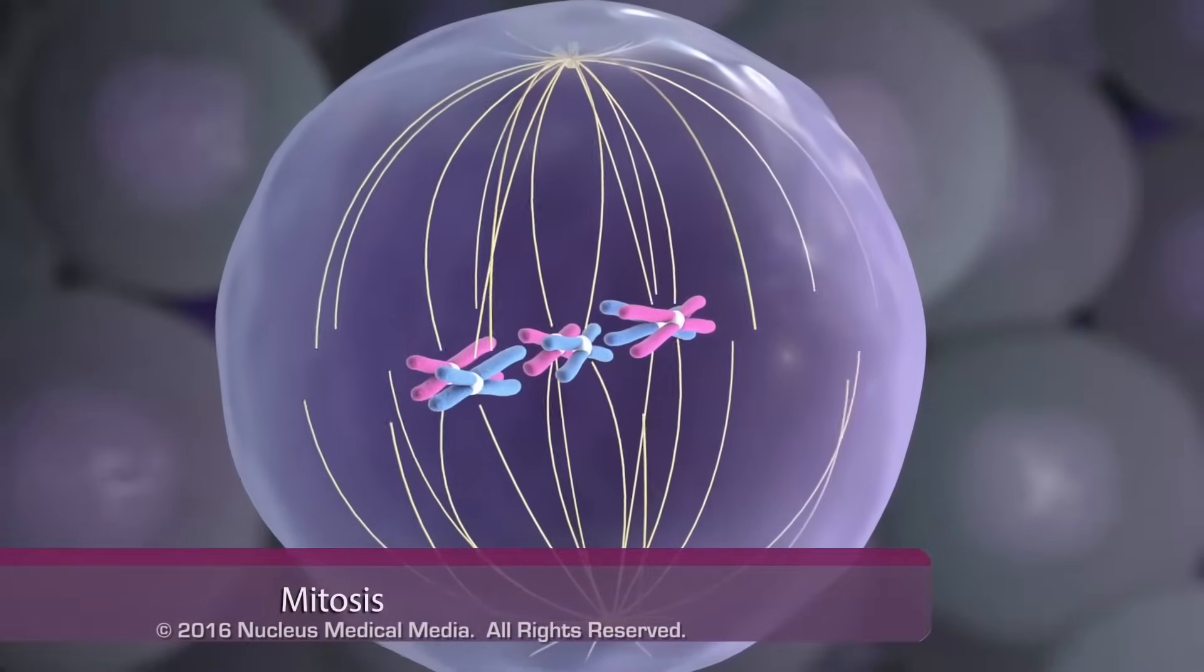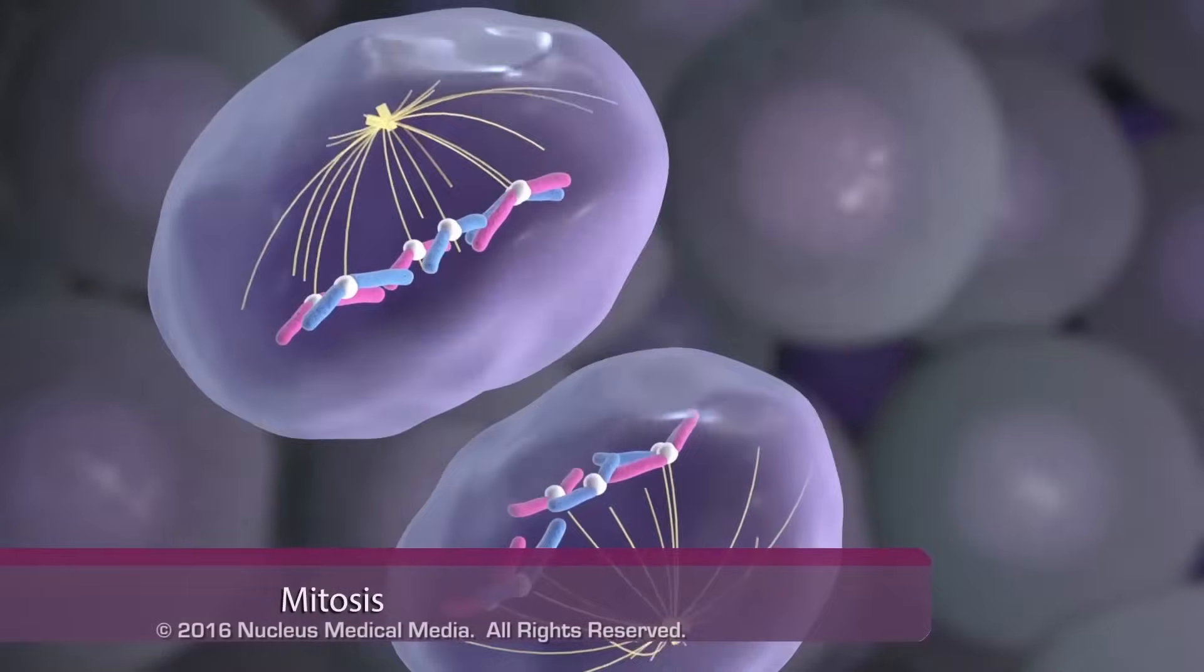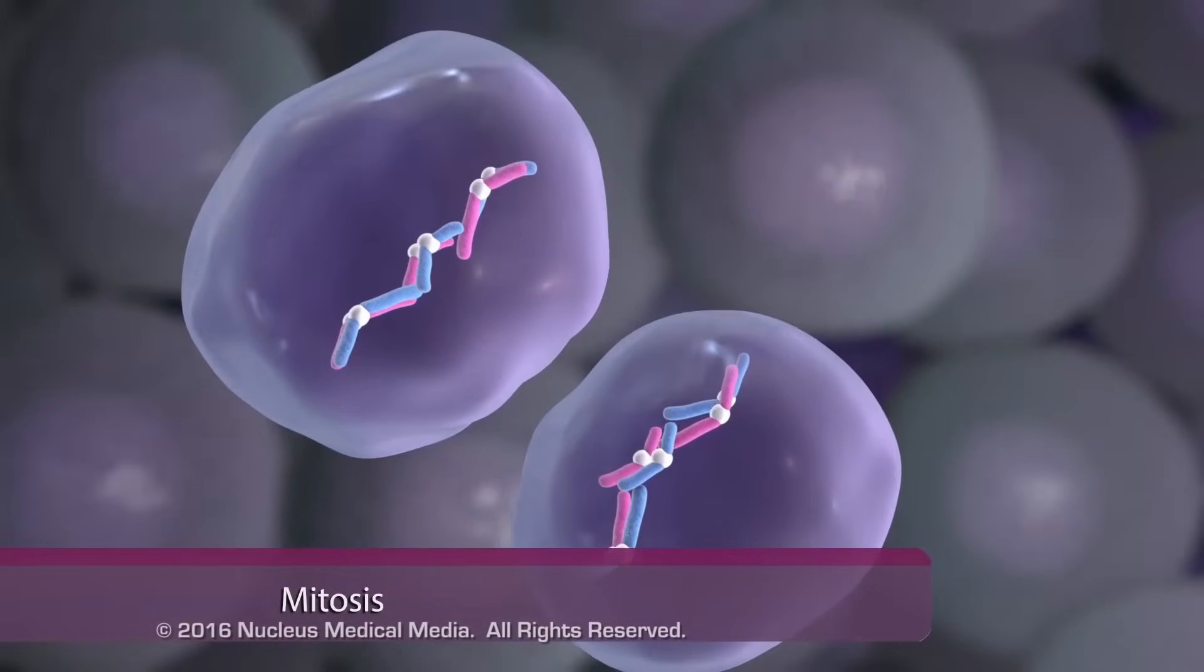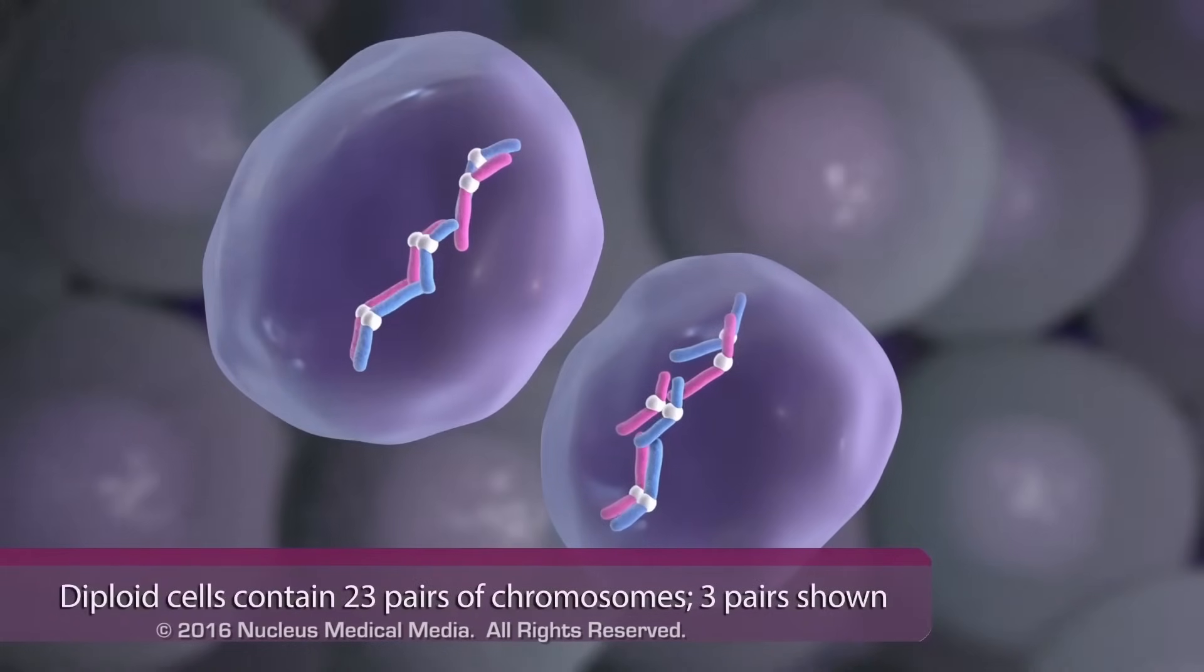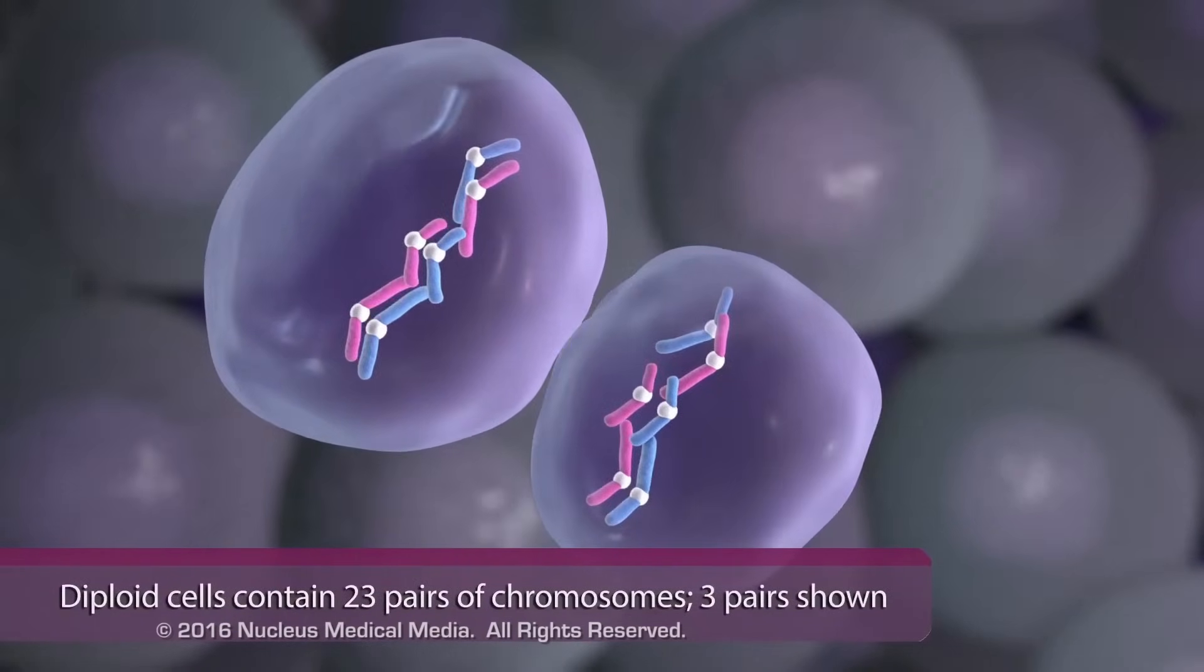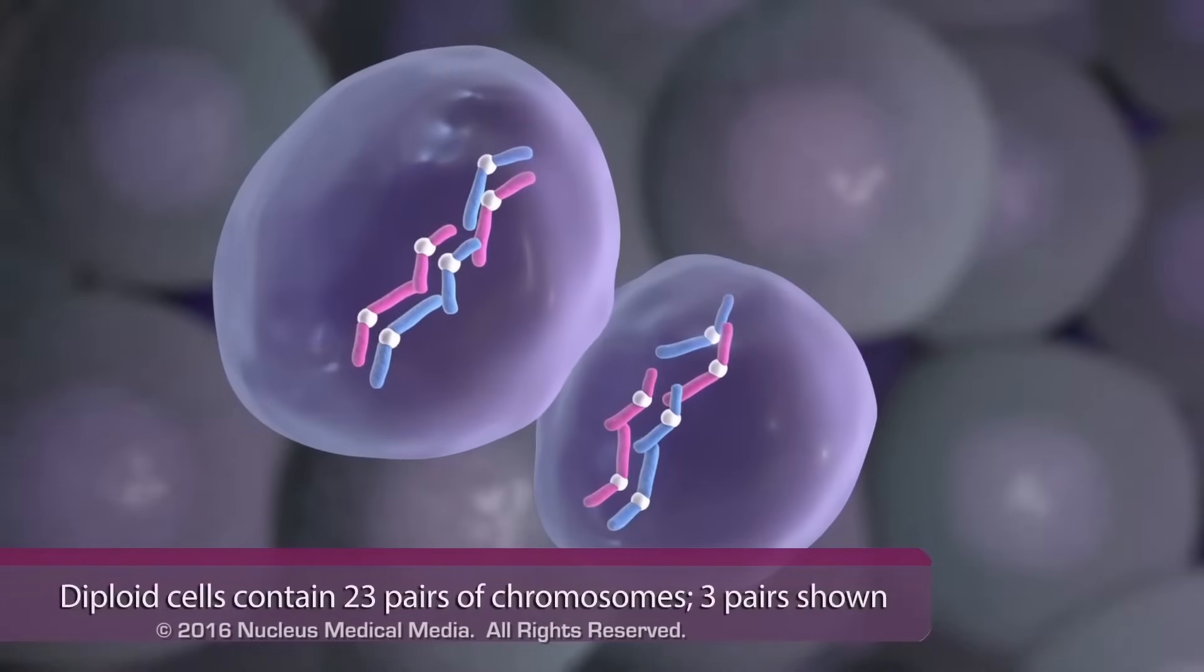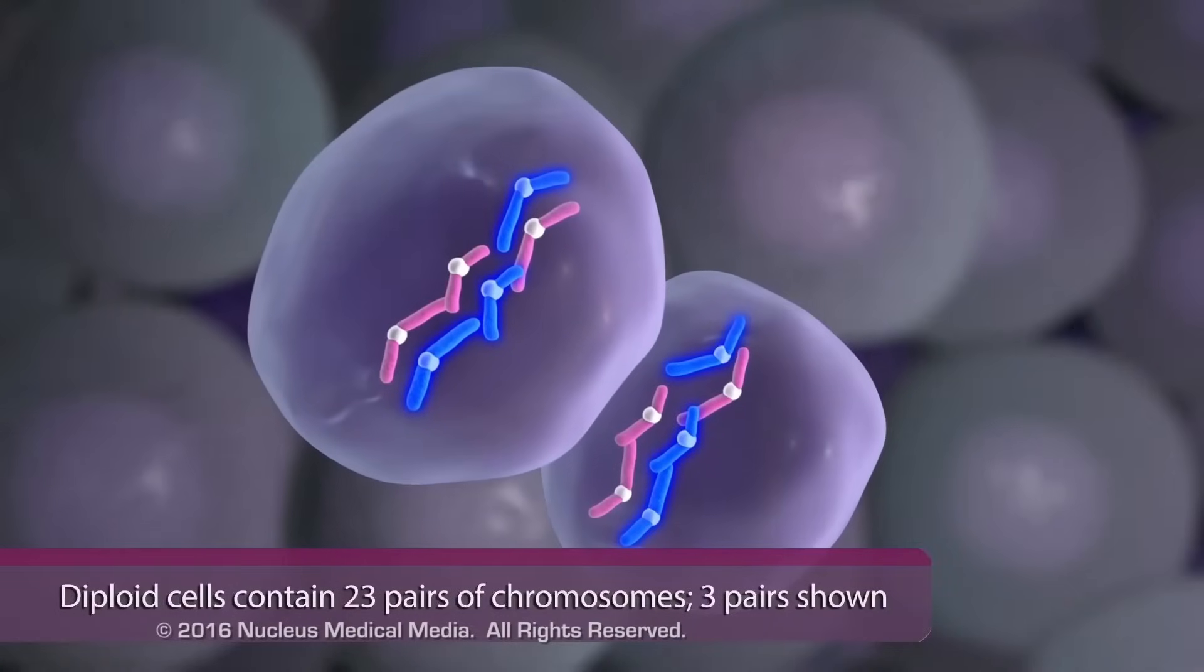In mitosis, there is one division, and the resulting two daughter cells contain the same number of chromosomes as the parental cell. These cells are called diploid cells because they contain 23 pairs of chromosomes, with each pair containing one maternal and one paternal chromosome.